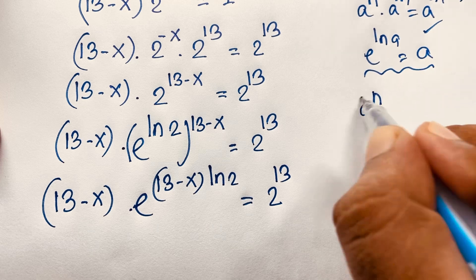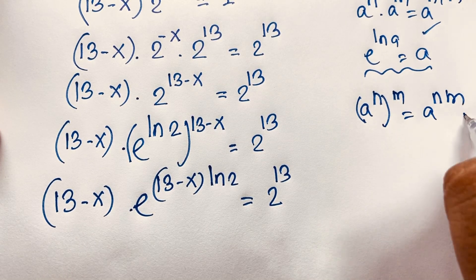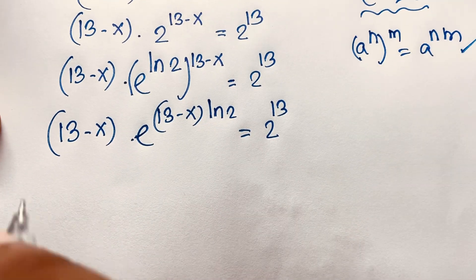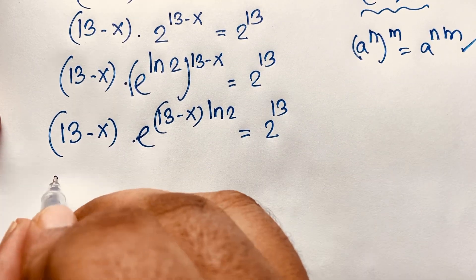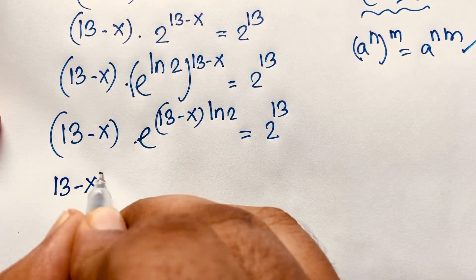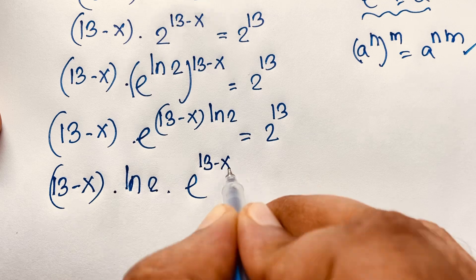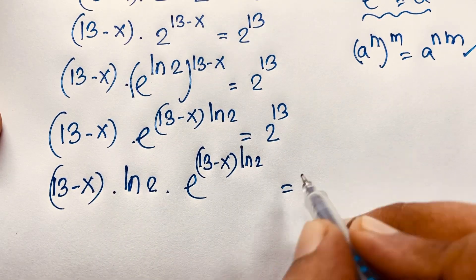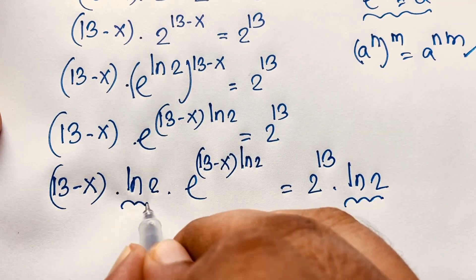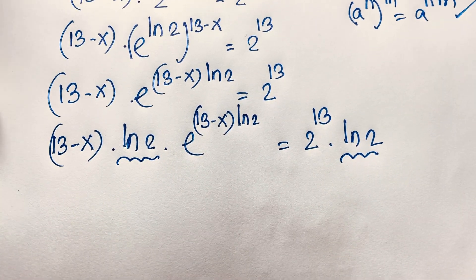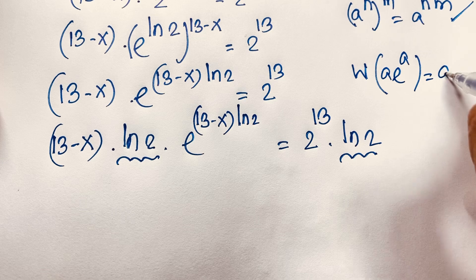Using the exponential formula — a to the power n, m equals a to the power n times m — I then notice there is no ln 2 factor on the right side, so I multiply both sides by ln 2. It becomes: 13 minus x times ln 2, times e to the power 13 minus x times ln 2, equals 2 to the power 13 times ln 2. Now I want to apply the Lambert W function. We know that W of a times e to the power a equals a.